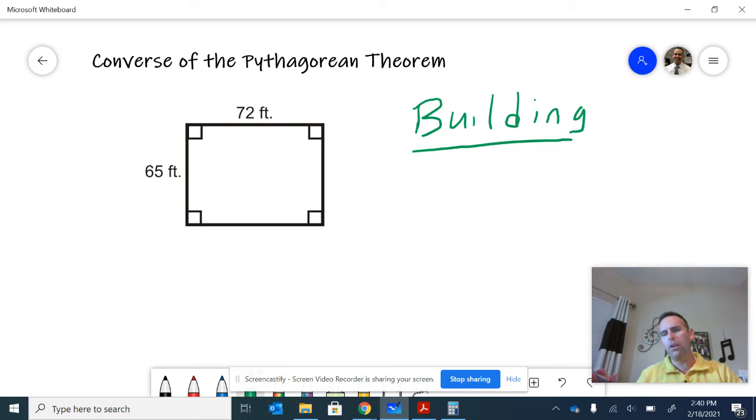So if I laid out these two lengths, let's say with boards, I laid those out first, and I wanted to make sure that this rectangle was in fact a rectangle. I wanted all of the angles to be right angles. I want it to be a perfect rectangle. When I get done, if I make another 65 and another 72, how do I know that that's a right angle at every corner?